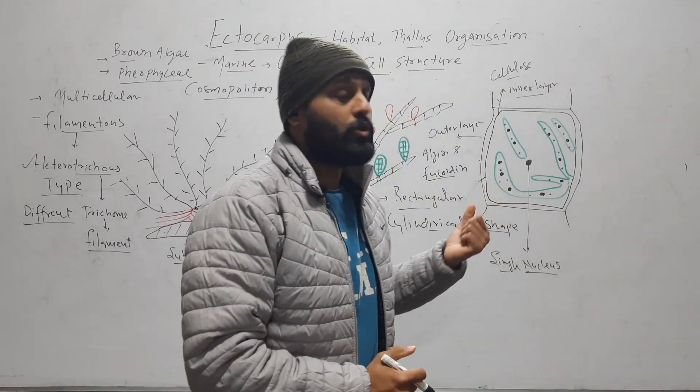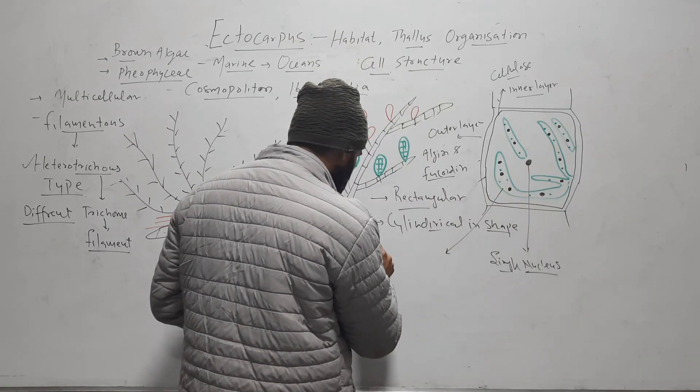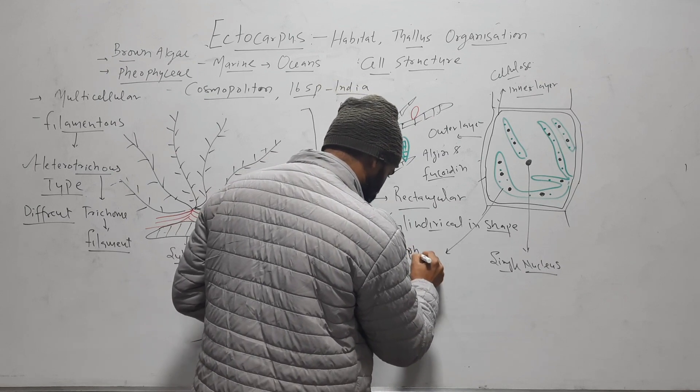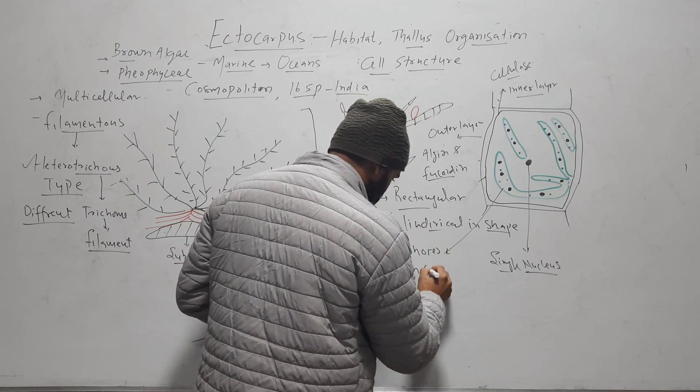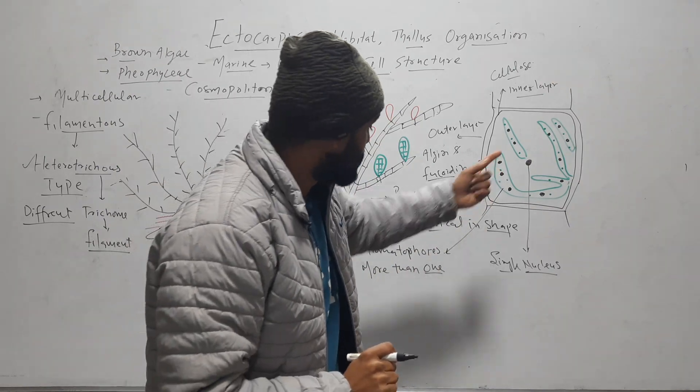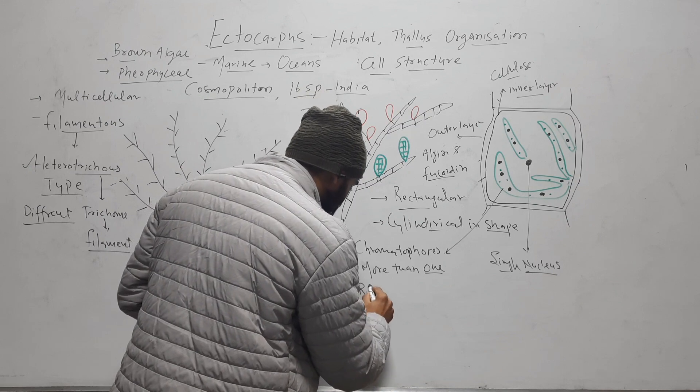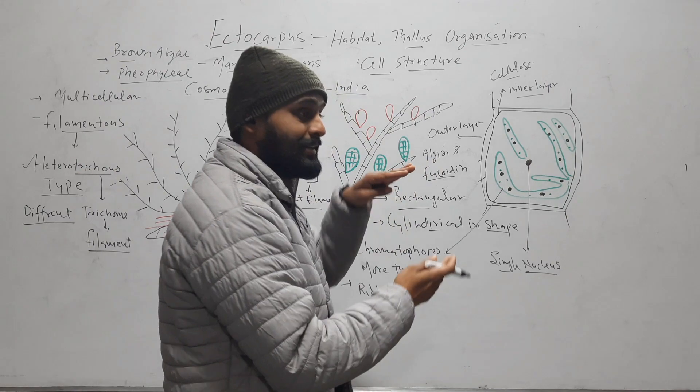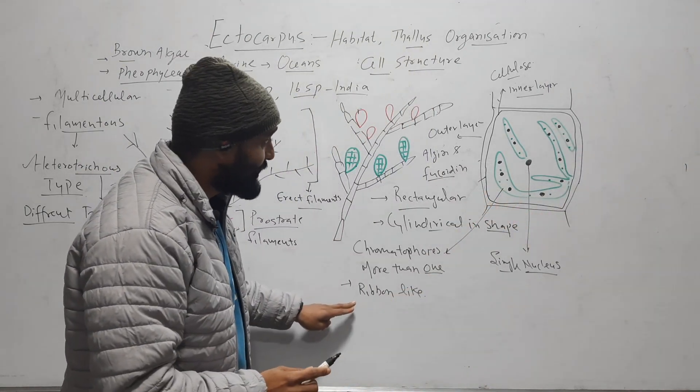And its chromatophores. These green colored structures are chromatophores. Chromatophores are more than one. And these are ribbon-like. Here you can see that these are ribbon-like.